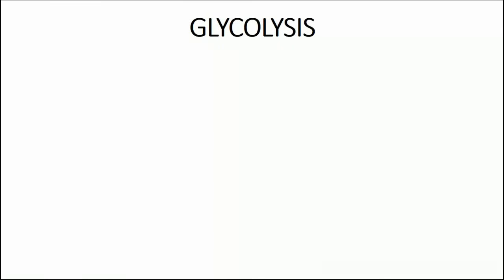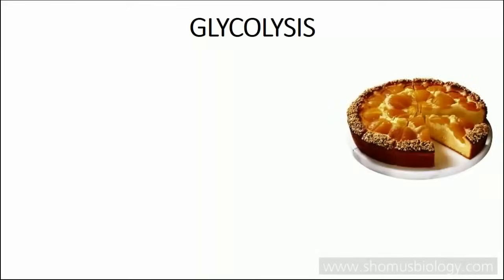Glycolysis is a metabolic process of converting glucose into pyruvate, and it goes through ten separate stages. Ten steps are required with ten different enzymes, and there are eleven different intermediates. Let's talk about each of them — the steps and all the intermediates of glycolysis.